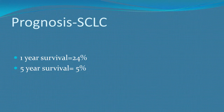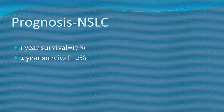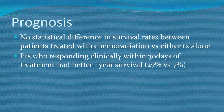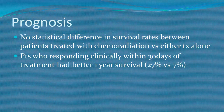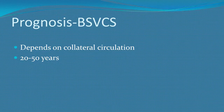For small cell lung cancer, 1-year survival is 24% and 5-year survival is 5%. For lymphoma, 1-year survival is 41% and 5-year survival is 4%. For non-small cell lung cancer, 1-year survival is 17% and 5-year survival is 2%. There is no statistical difference in survival rates between patients treated with chemoradiation versus either therapy alone. Patients responding clinically within 30 days of treatment have better 1-year survival.